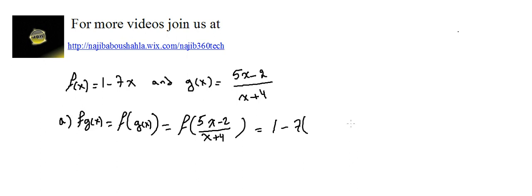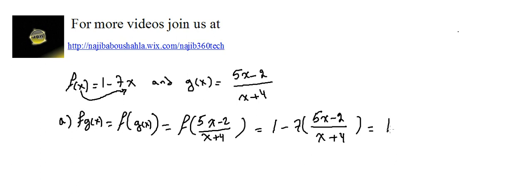f(x) is 1 minus 7x, but instead of x I put (5x minus 2) over (x plus 4). So we substitute that in and calculate: 1 minus 7 times (5x minus 2) over (x plus 4). Multiplying up in the numerator gives 35x minus 14 over (x plus 4).